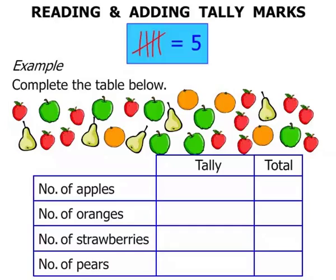So one by one — there's no real quick way of doing this. The first is a strawberry, so in our strawberry row let's mark that one and cross it out. We're crossing them out to indicate we've counted them, because it's very easy to count them twice or miscount completely if we don't.